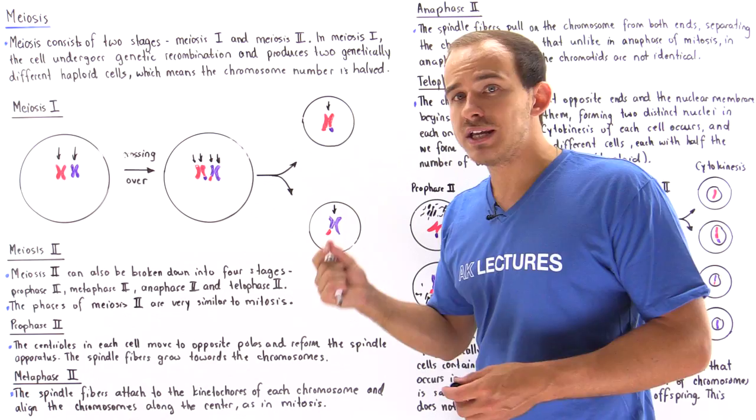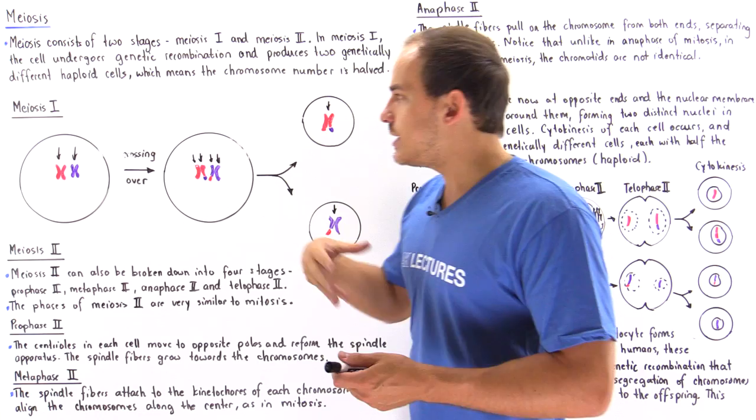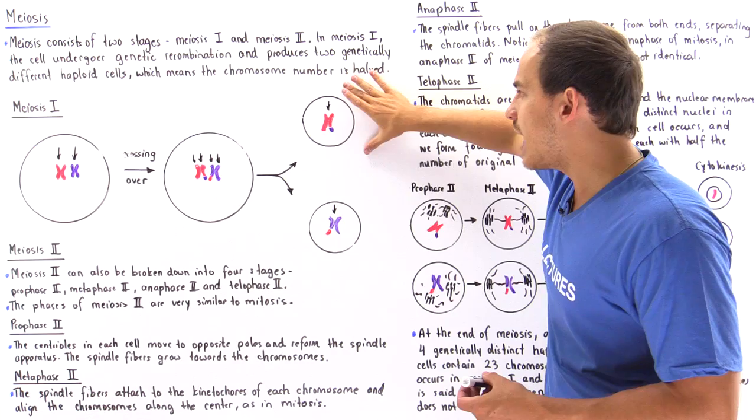In humans we begin with 46 chromosomes, so each one of these cells will contain only 23 chromosomes.